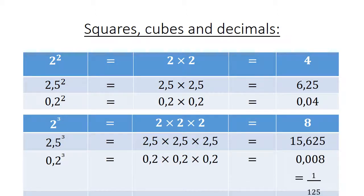If we look at the cube: 2 to the power of 3 equals 2 times 2 times 2 equals 8. 2,5 to the power of 3 is 2,5 times 2,5 times 2,5 which is equal to 15,625. You can check this on your calculator. And 0,2 to the power of 3 equals 0,2 times 0,2 times 0,2 which is equal to 0,008, and the simplest form is 1 over 125.